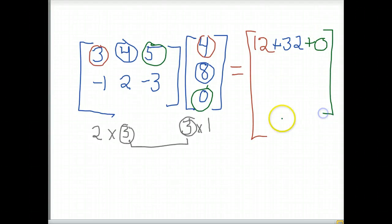These products all get added together. So 12 plus 32 plus 0 would be 44.